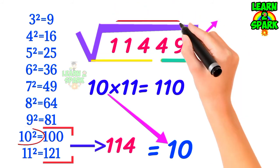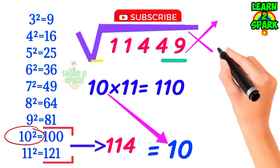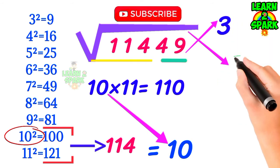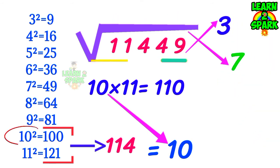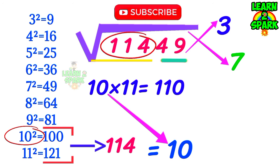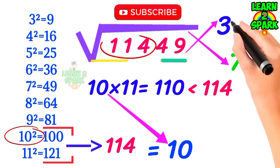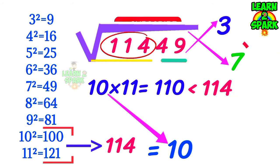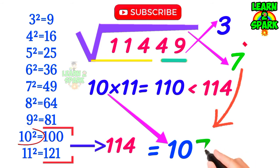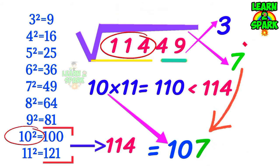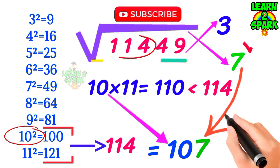Then consider the units place, that is 9 here, which comes from the squares of 3 and 7. Now which one will come down, 3 or 7? You know what to do now. Consider the first group containing 114 which is greater than 110. So you have to take down the greatest number out of the two, that is 7 here. Bring down 7 for your final answer and the required square root is 107. Isn't that simple and easy?